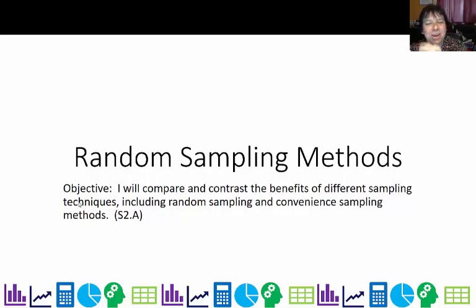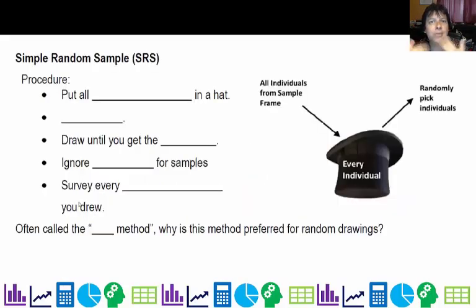And here we are talking about getting random samples. We had some experience in the previous lesson dealing with getting random rectangles that we were working with, and we used a random number table to do that. How do we draw random samples in general?